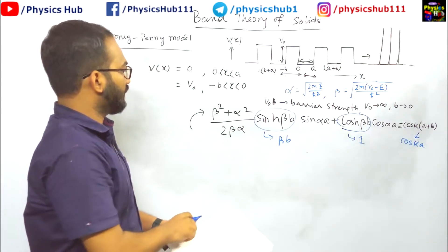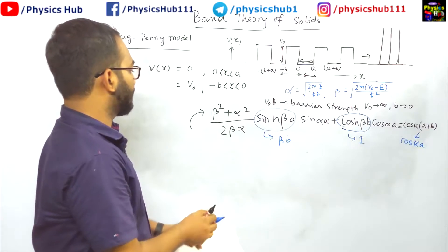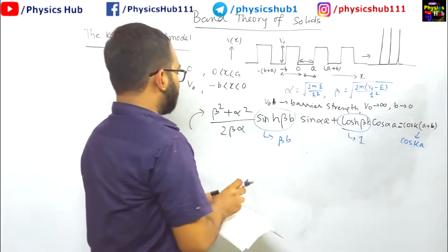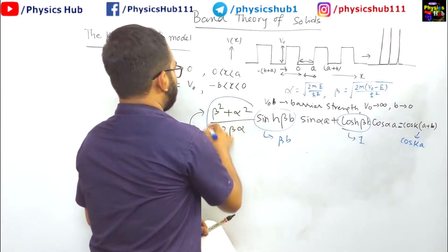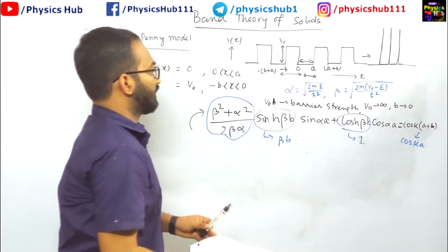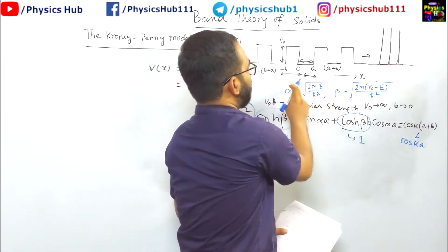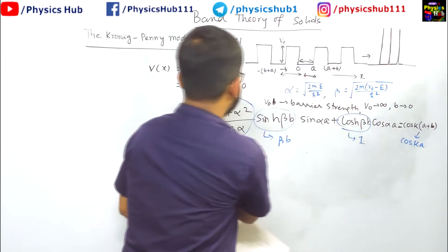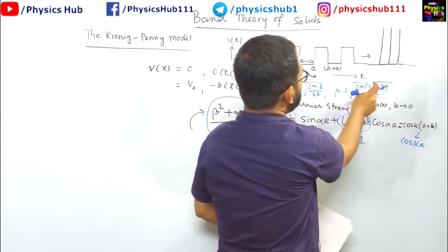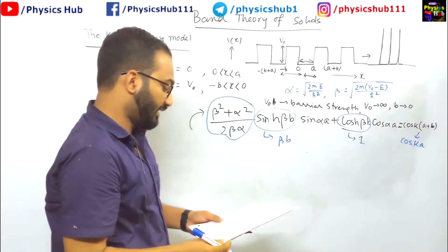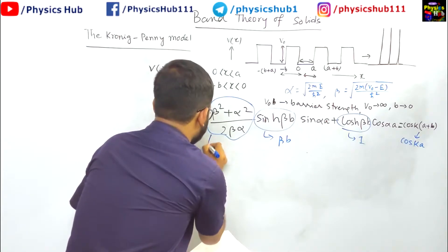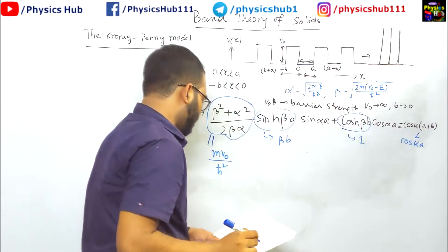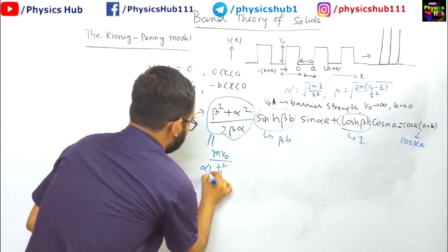Now we want to calculate this value beta square plus alpha square divided by 2 beta alpha. Beta square plus alpha square - twice m e by h cut square is getting cancelled and this 2 is also cancelling. So m v naught by h cut square is remaining. This will come out to be m v naught divided by h cut square, and the alpha beta term will be there.